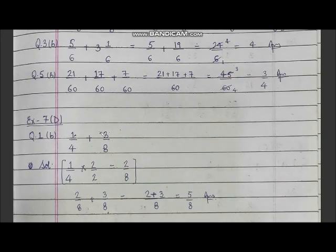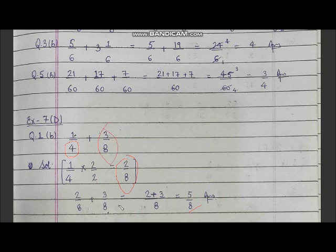Now, if we are adding fractions which are unlike — where the denominators are not the same — first we will make the denominators the same, and then we will add the numerators, followed by writing the denominator one time. For example: 1 upon 4 and 3 upon 8. We will make 4 into 8 by multiplying by 2. If we multiply 2 in the denominator, we must also multiply 2 in the numerator, so this becomes 2 upon 8. Now we add 2 upon 8 and 3 upon 8 — adding only the numerators, 2 plus 3 gives 5, and we write the denominator once. So the answer is 5 upon 8.